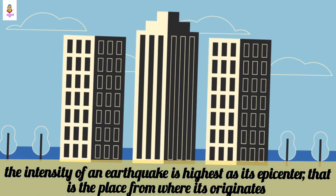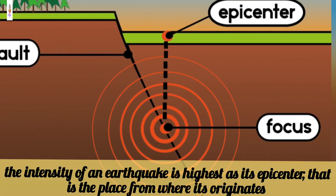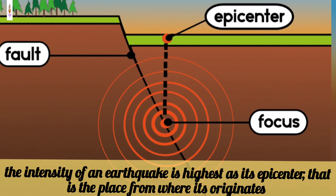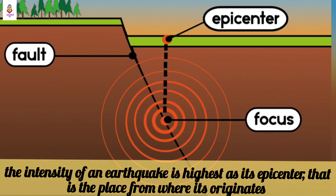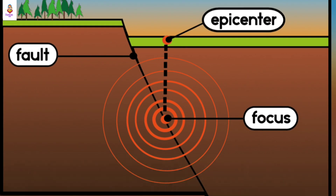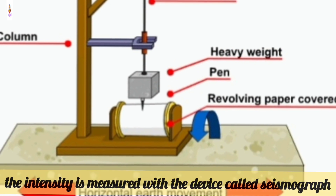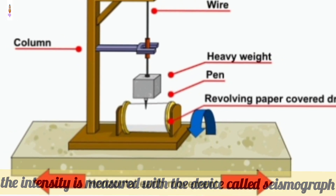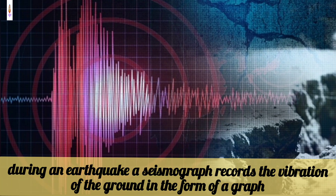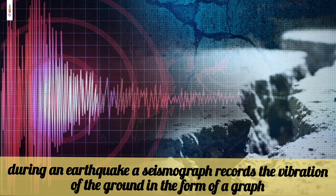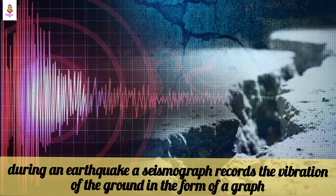The intensity of an earthquake is highest at its epicenter. The intensity is measured with a device called a seismograph. During an earthquake, a seismograph records the vibration of the ground in the form of a graph.